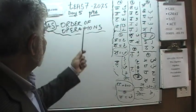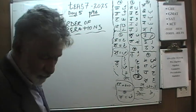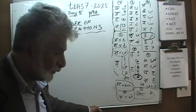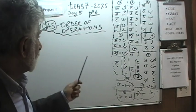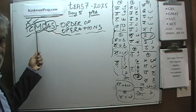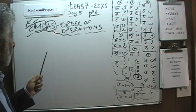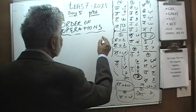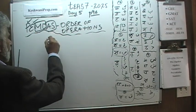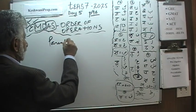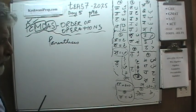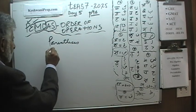Today is lesson number 5. Yesterday on day number 4, we started a new concept: the concept of order of operations. We also learned that we have a mnemonic device. The mnemonic device is PEMDAS, which stands for parenthesis first, then exponents. I am just recapitulating it.